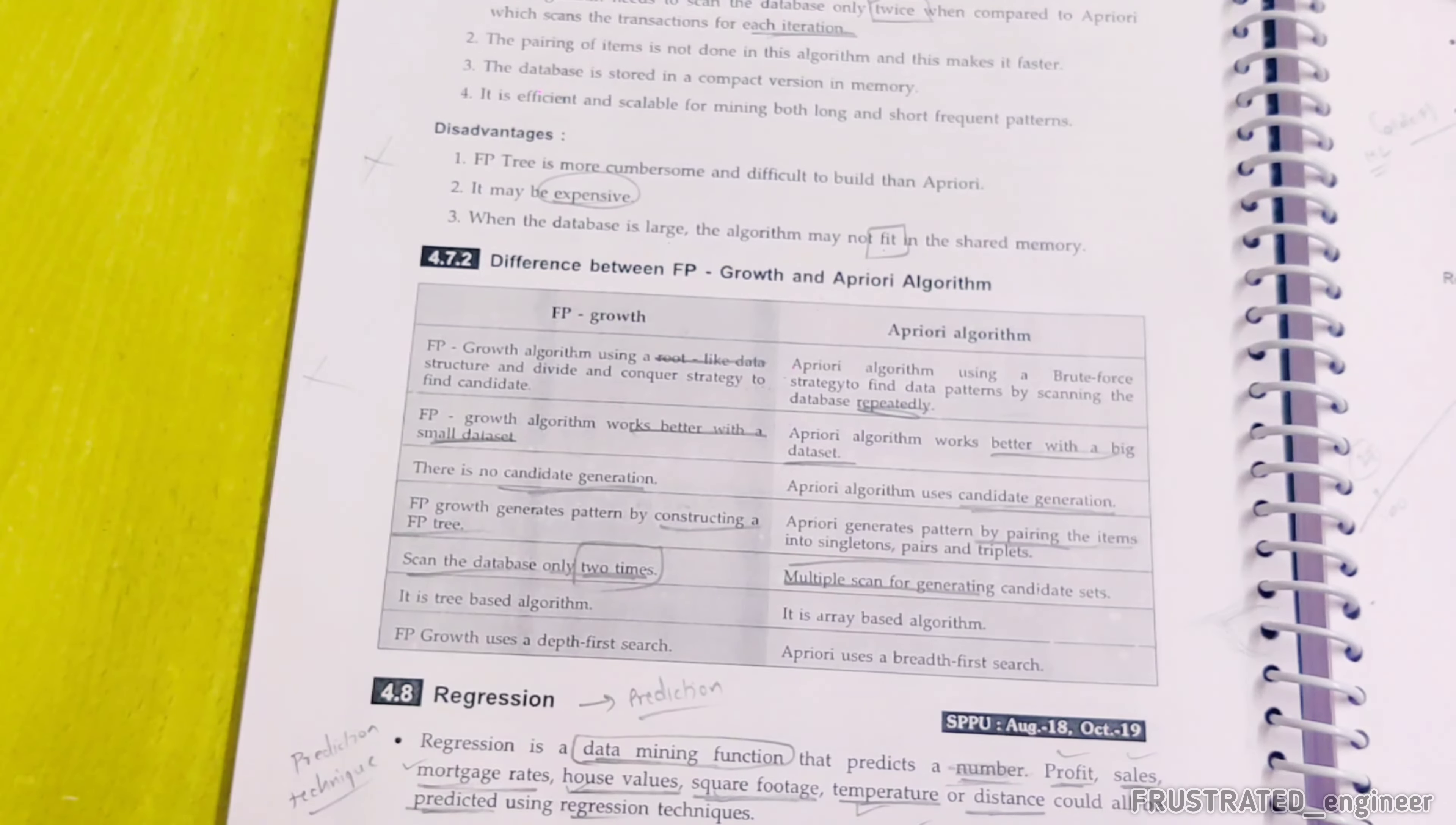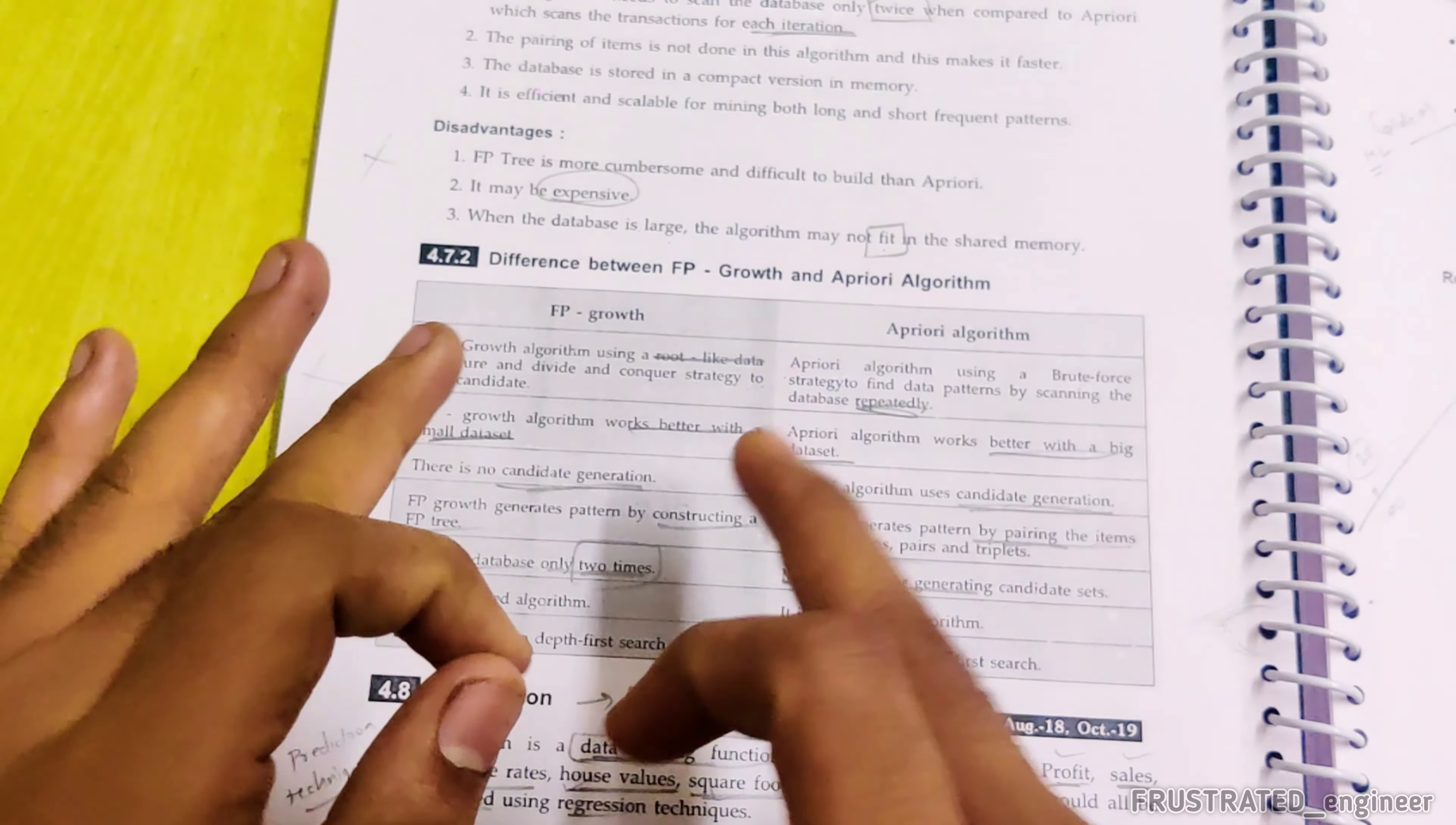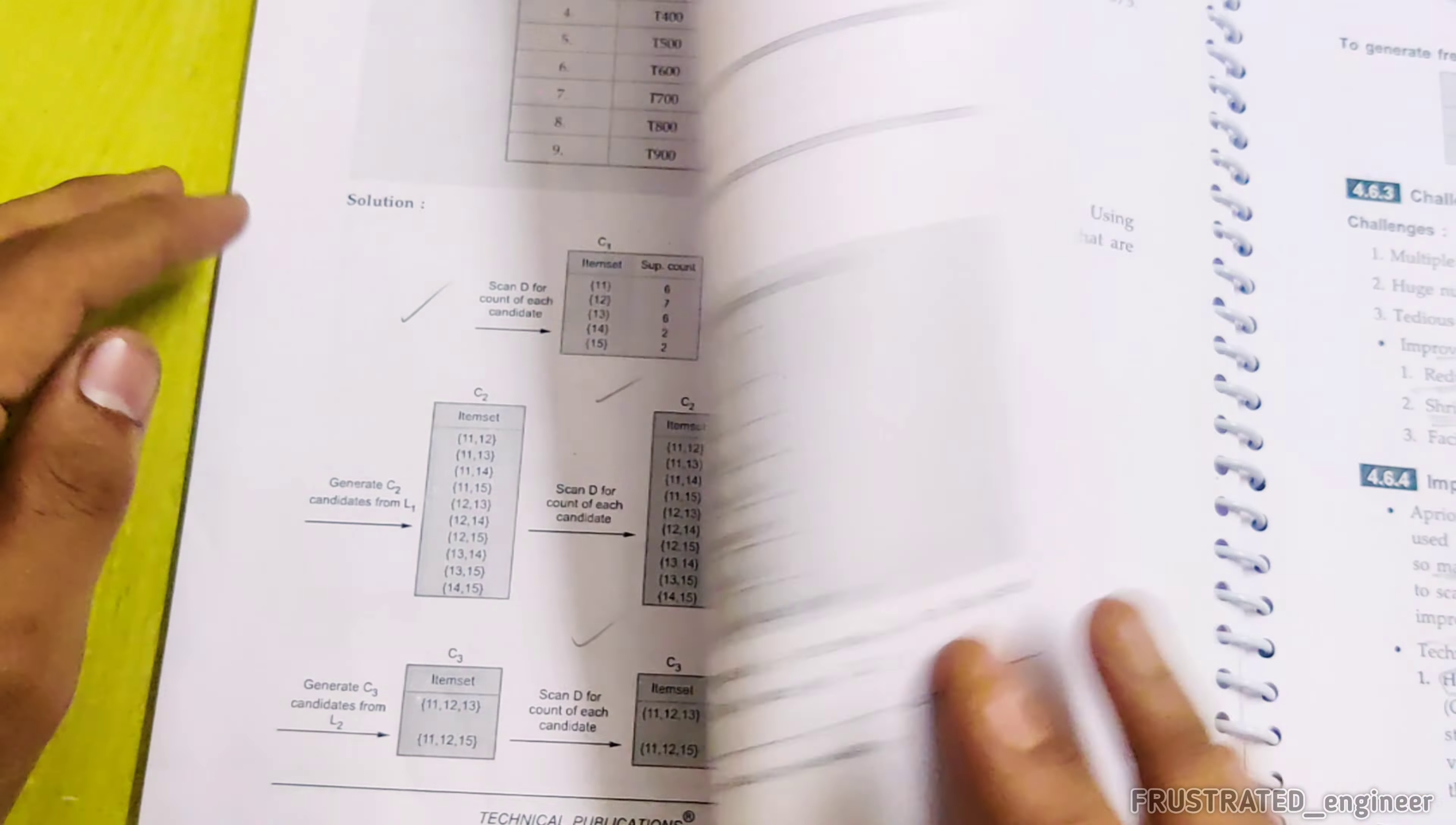We have an example. Okay, FP Growth and Apriori Algorithm are asked in most of the exams. What does FP Growth happen? What happens in Apriori? We need multiple scanning. That's why we have brought FP Growth Algorithm. Where we have to scan only two times. And it's finished. You have the entire data.